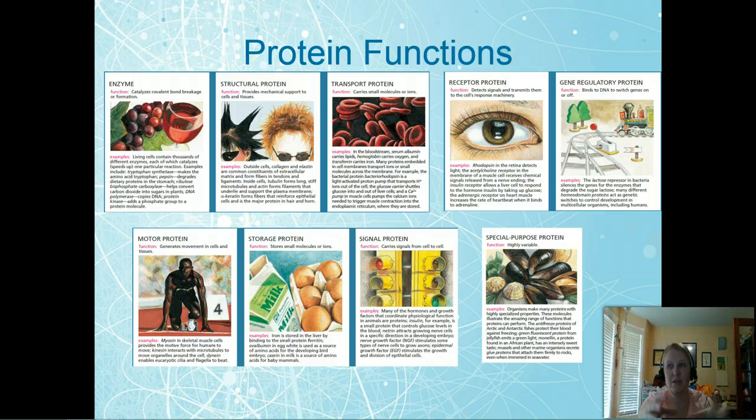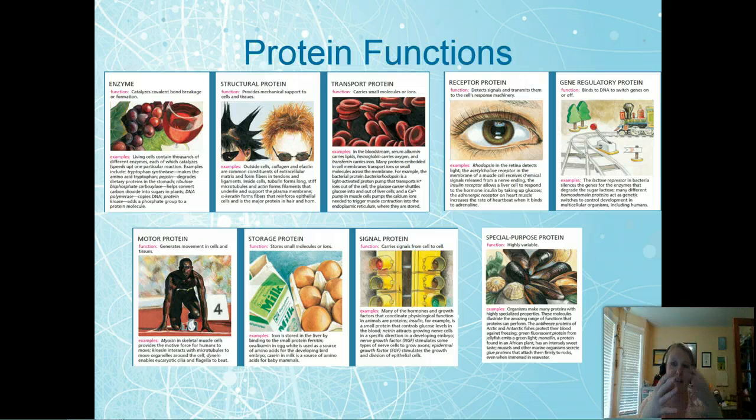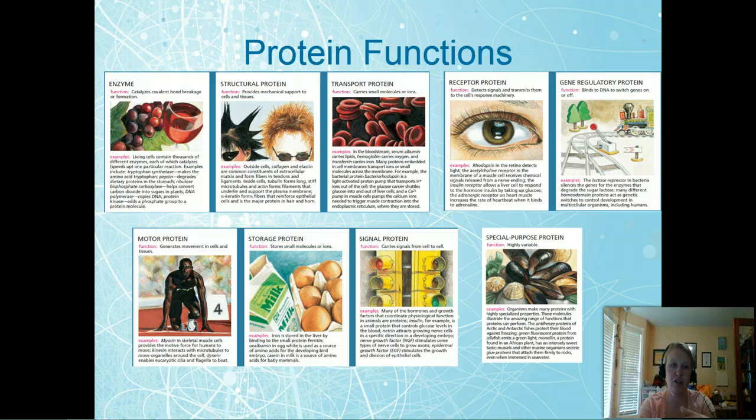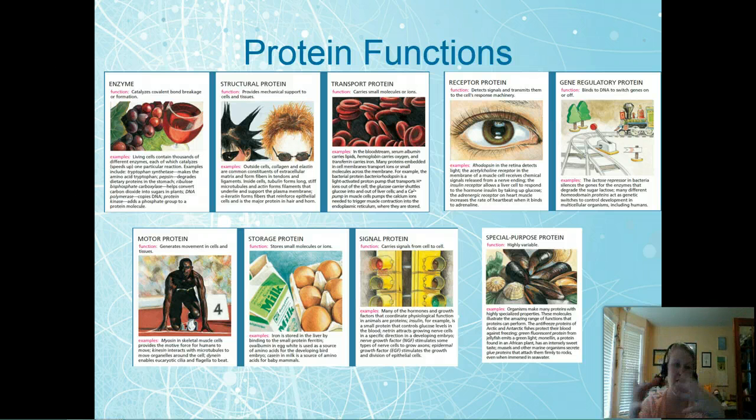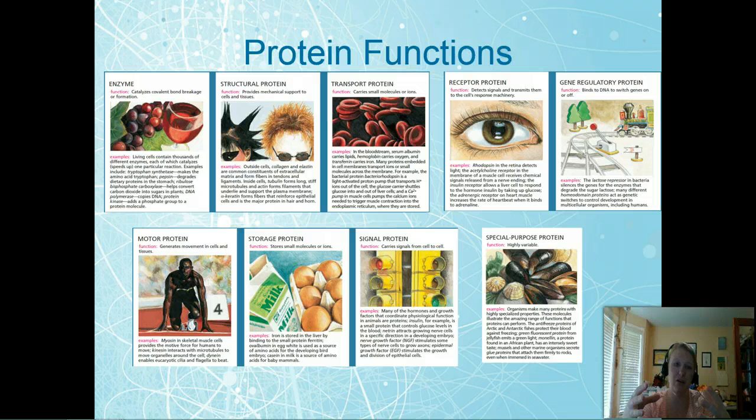So the first of them are enzymes. And these are they catalyze reactions. These allow things to happen. We talked about that all in Chapter 3. That's what enzymes are doing. They help cause bond breakage or bond formation to allow reactions to occur later. We have structural proteins. These provide mechanical support to the cell and tissues and help them to have the shape that we know they have.